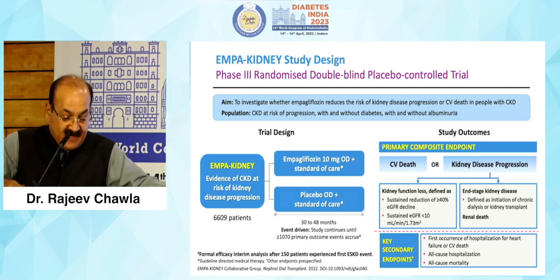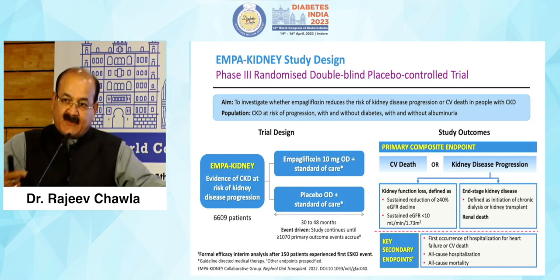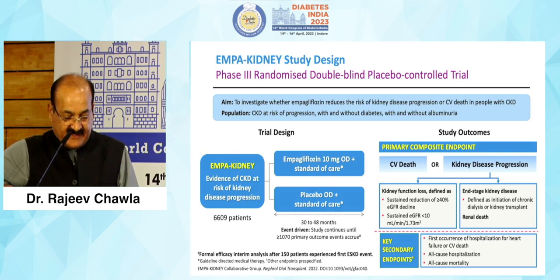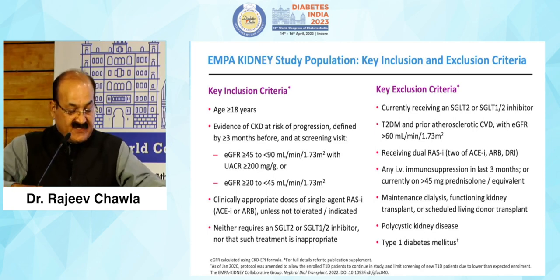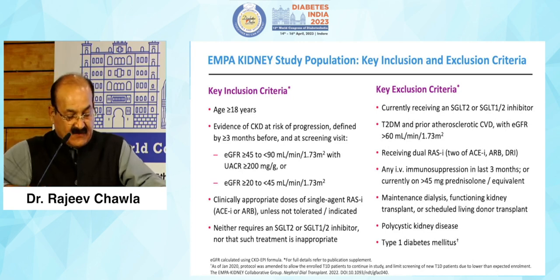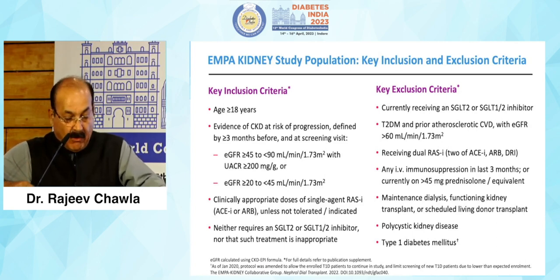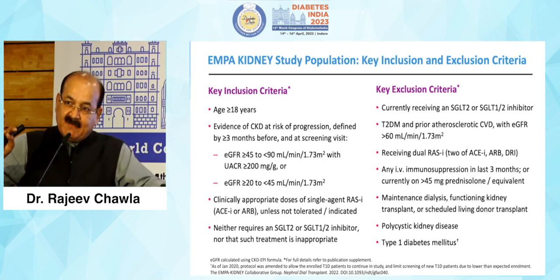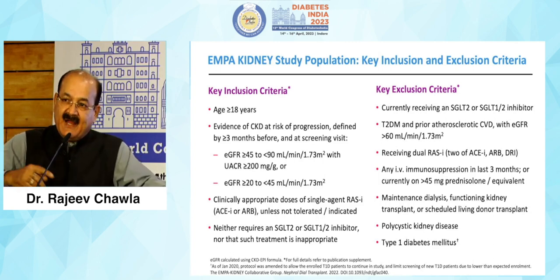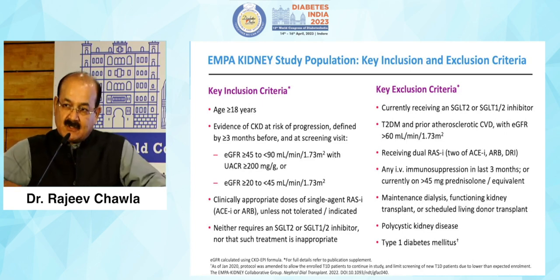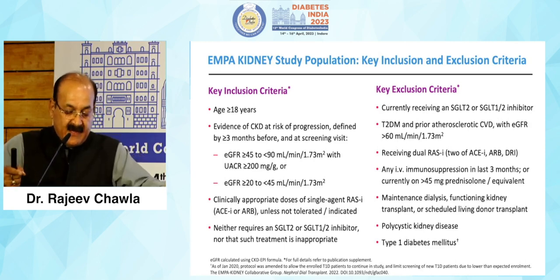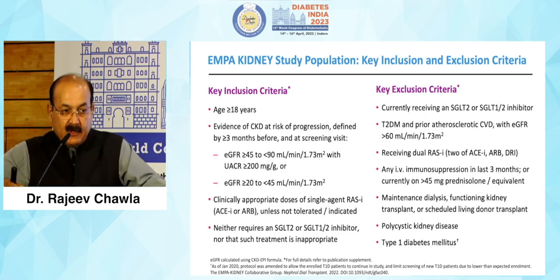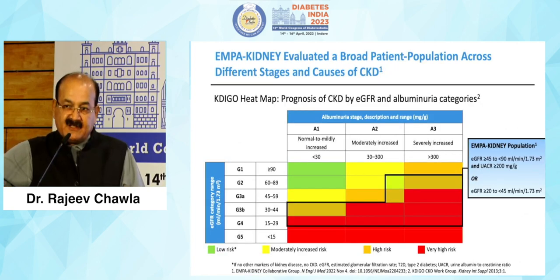Secondary endpoints included hospitalization with heart failure or CV death, all-cause hospitalization, and all-cause mortality. Key inclusion criteria: patients over 18 years with evidence of CKD at risk of progression — eGFR between 45 to 90 with albuminuria more than 200 milligram per gram, or eGFR between 20 to 45 regardless of albuminuria — all already on appropriate doses of ACE inhibitor or ARB. Key exclusions: those already on SGLT2 inhibitors, dual RAS blockade, type 1 diabetes, or polycystic kidney disease.